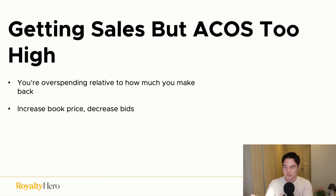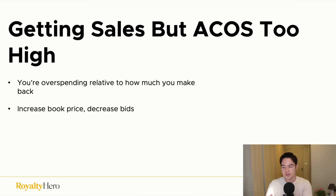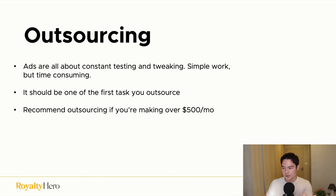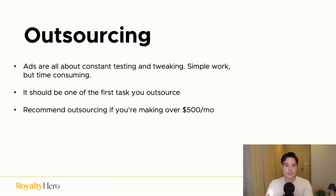If you're getting sales but ACOS is too high, you're overspending relative to what you make. You can increase the book price so you make more per sale with the same ad spend, or decrease the bid to spend less and improve the profit margin. Those are your two solutions. As your ads setup grows over time, it gets increasingly complex — this is one of the first things you should outsource so you can focus on more important tasks like creating more books and getting reviews.